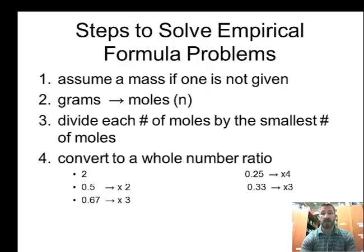So let's go over the steps of how to solve empirical formula problems. Really four steps. The first step is to assume a mass if one is not given. The problems will oftentimes be given in percentages, and we'll want to assume a certain mass. The next step is to change grams to moles. And the third step is to divide each number of moles by the smallest number of moles. After you have the number of moles of each element, you want to convert all that number of moles to a whole number ratio.